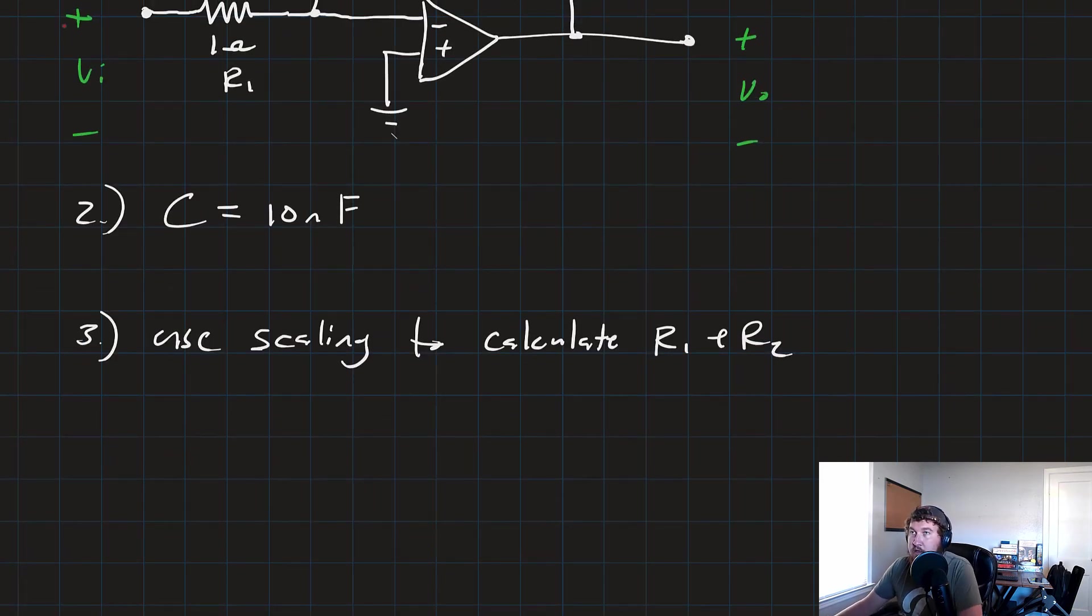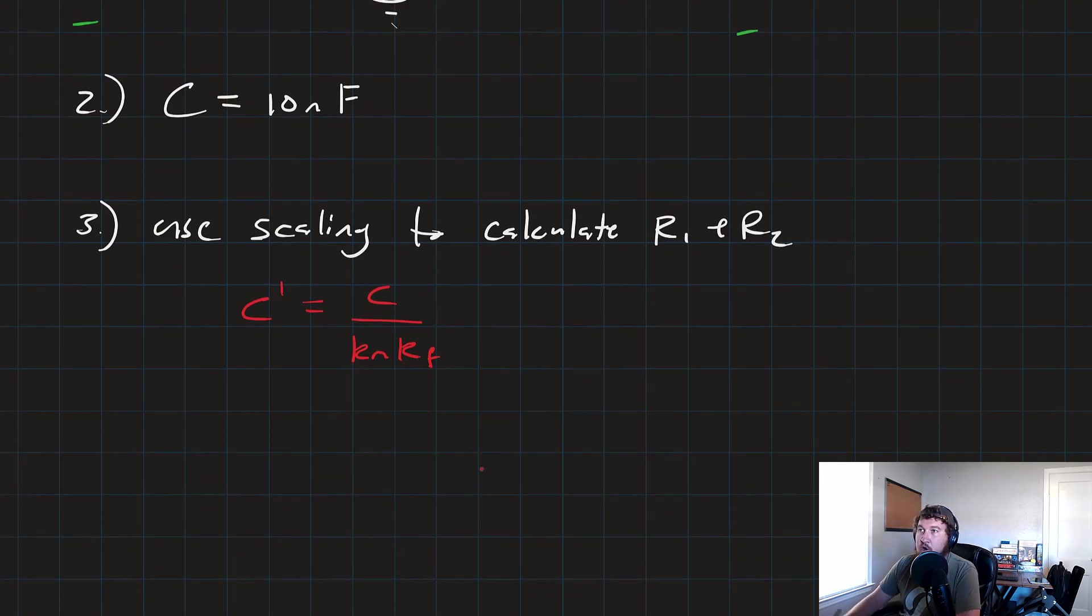And then step 3 is use scaling to calculate R1 and R2. So we'll start with that scaling function for capacitance. C prime is equal to the original capacitor, the prototype capacitor, over Km times Kf. Now, we know what Kf is because we want to shift from 1 Hz, or 1 radian per second, out to our new thing. So what we need to do actually first is calculate our frequency scaling constant in radians per second.